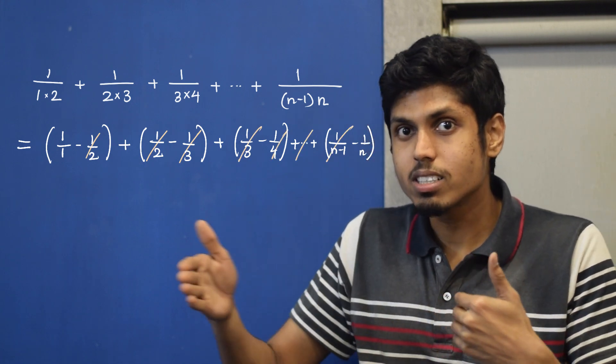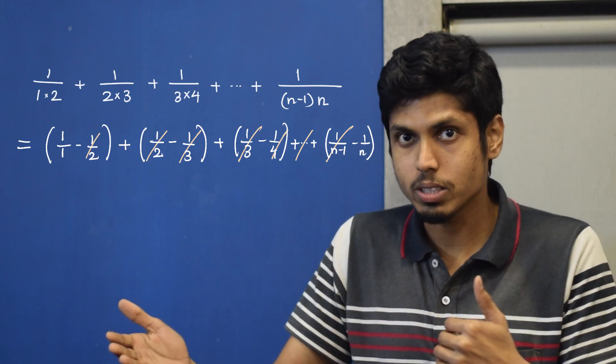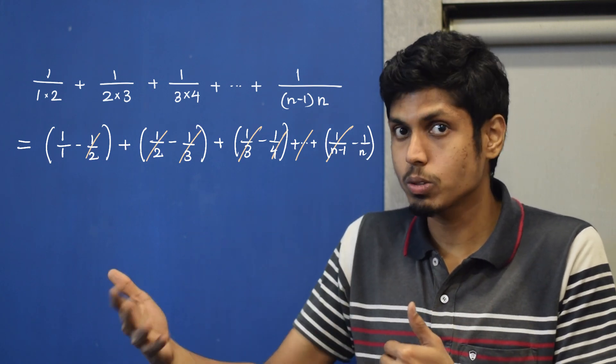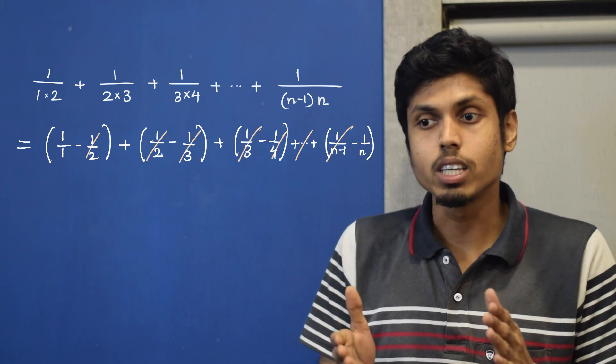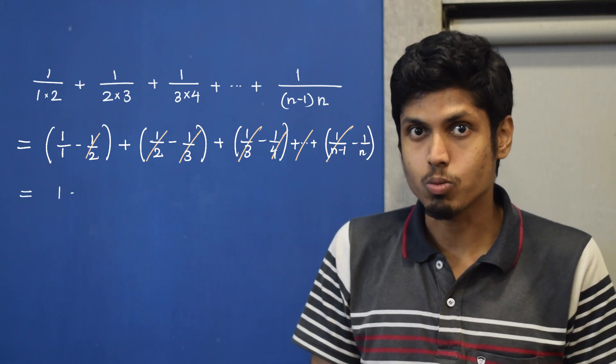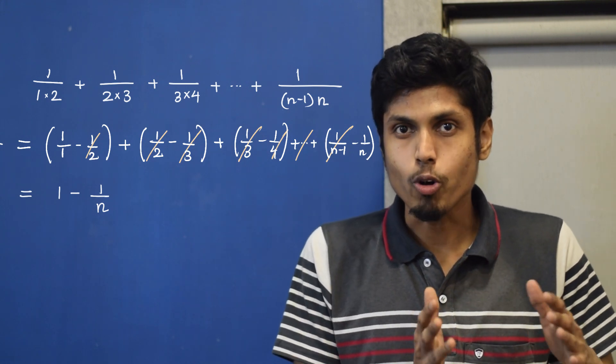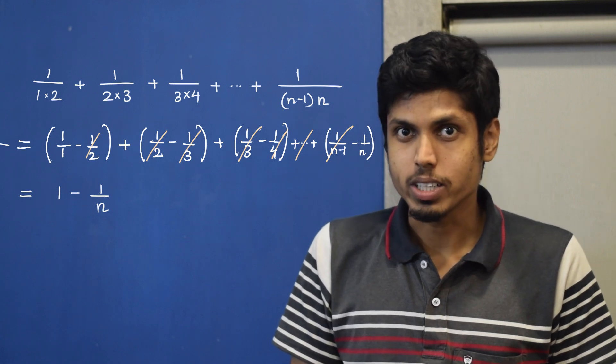So all these terms, for example, minus 1 by 2 plus 1 by 2 minus 1 by 3 plus 1 by 3, so on till minus 1 by n minus 1 plus 1 by n minus 1 nullifies and gives us the residue of 1 minus 1 by n. So we are going to solve a problem like this which is not very trivial.